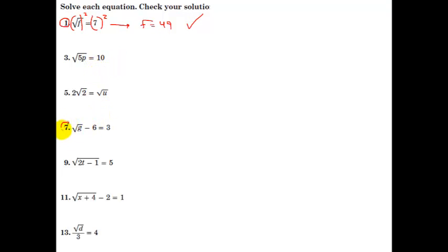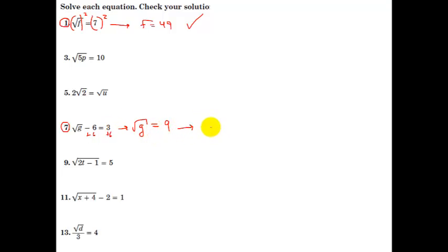Let's jump down to number 7. You don't want to square both sides yet because you don't have the square root symbol isolated. So, the first thing you'll do is add 6 to both sides. That gives you the square root of G is equal to 9. Then you square both sides and you get G equals 81. And, of course, if you plug it back in, it works.